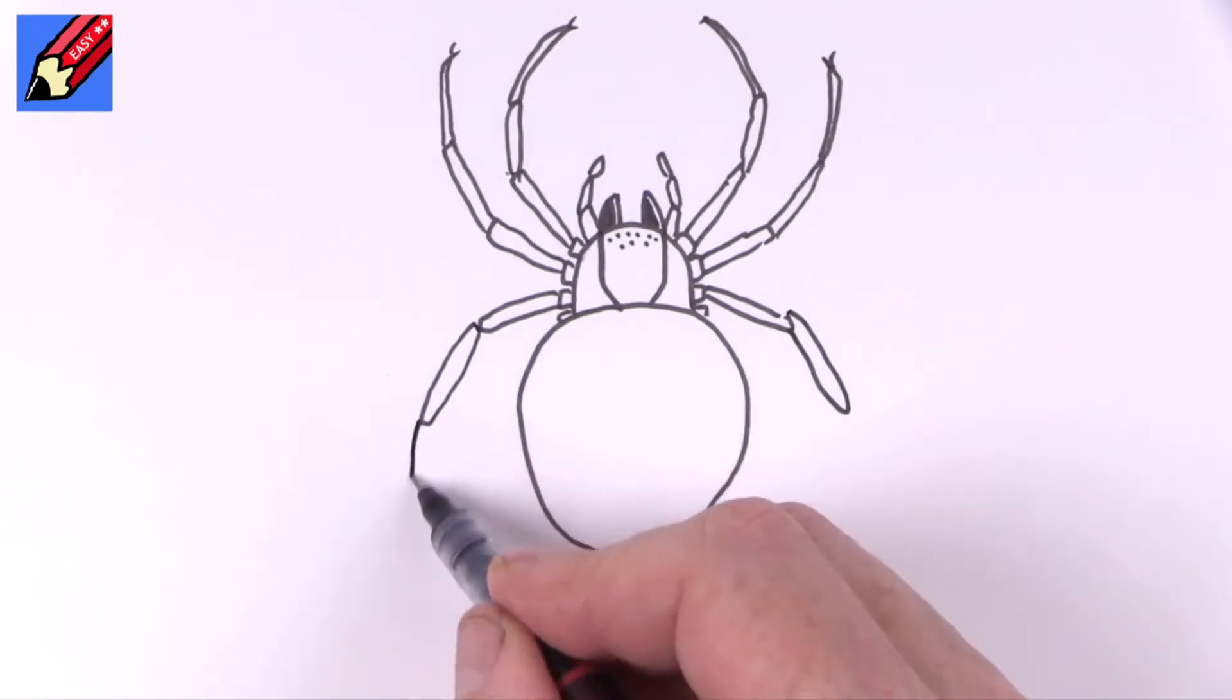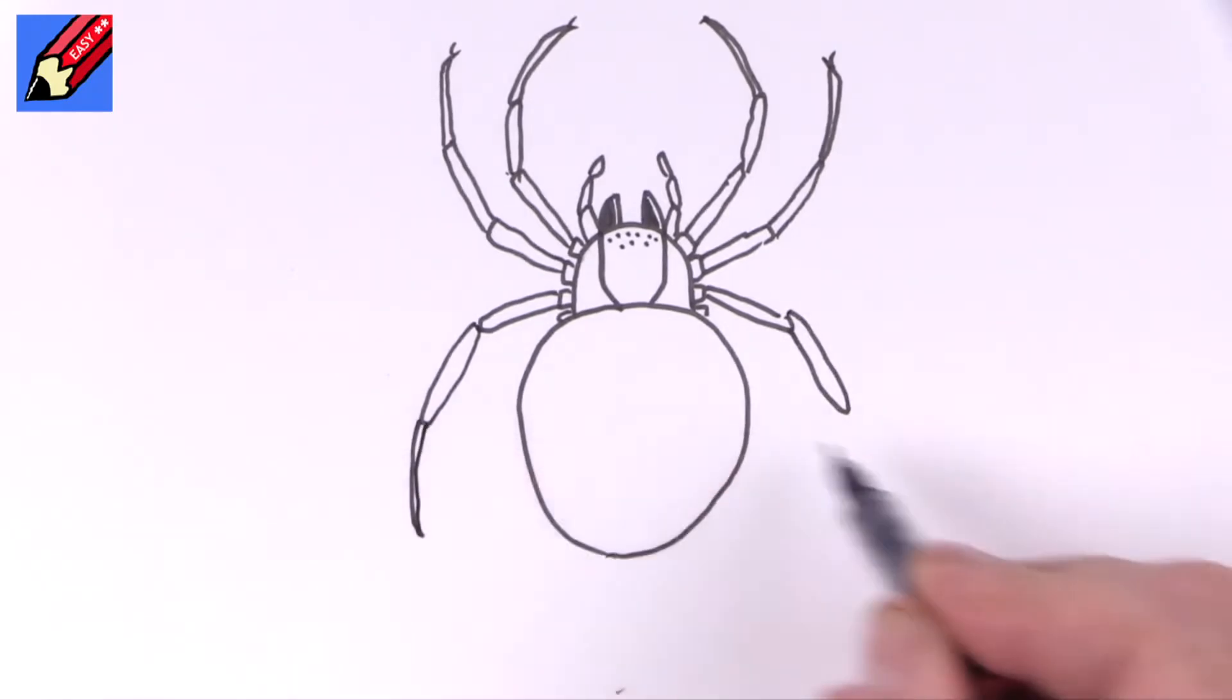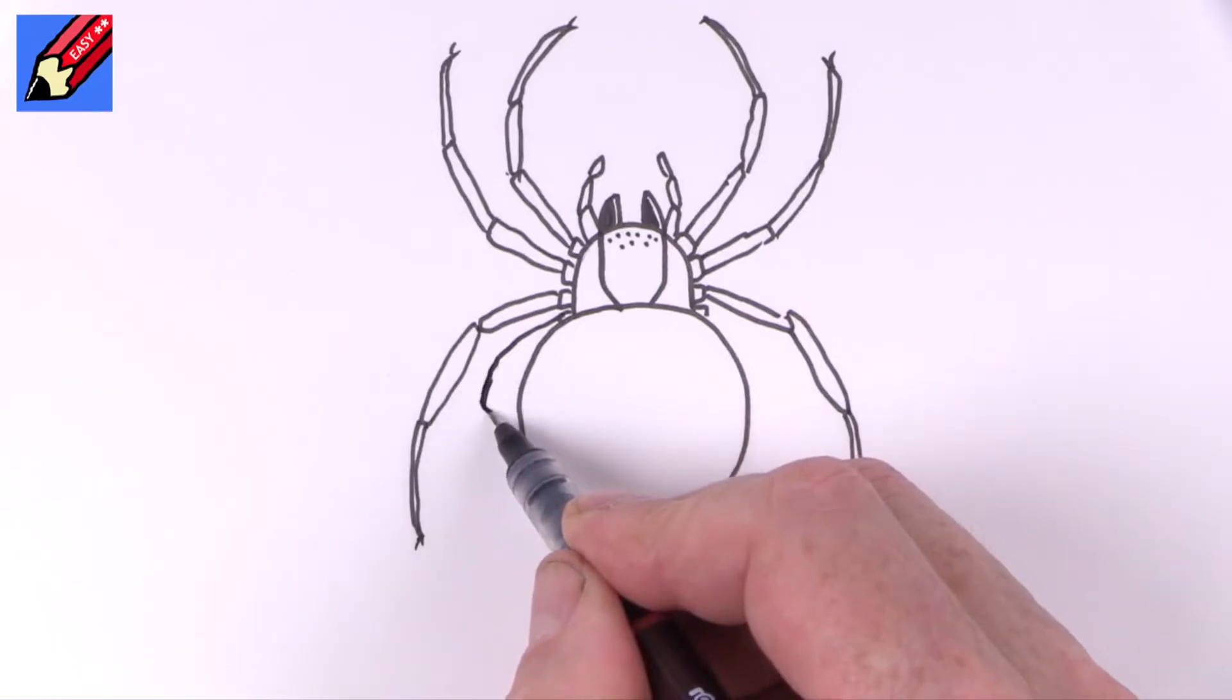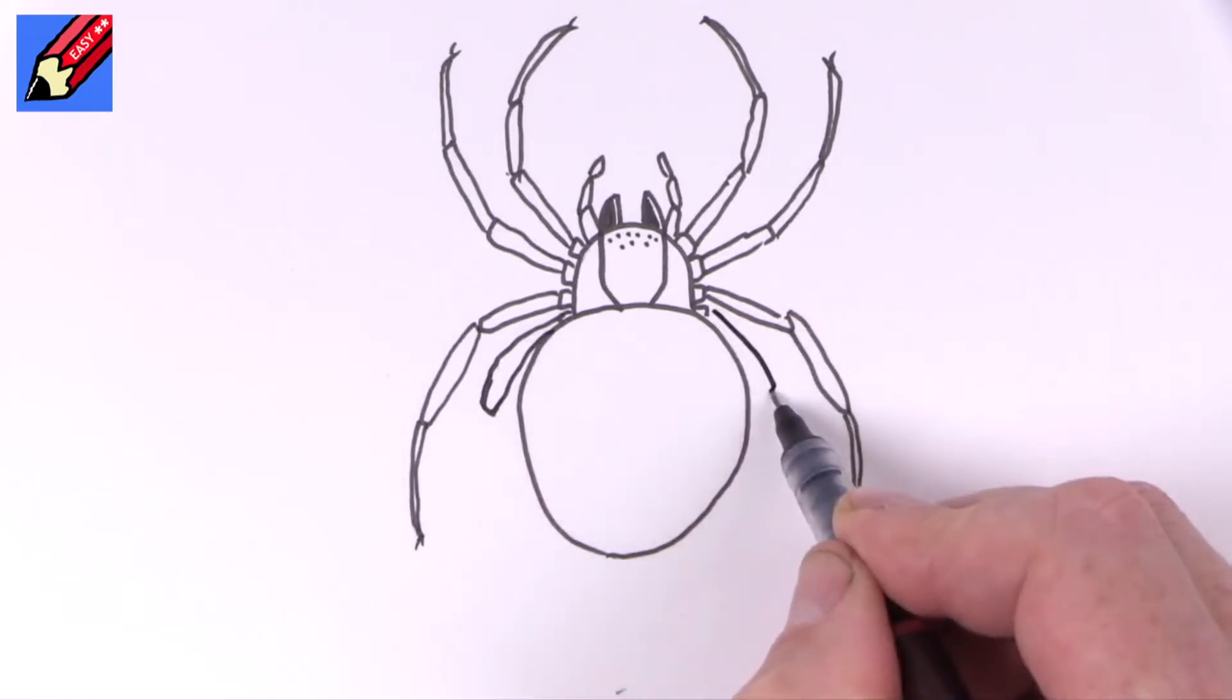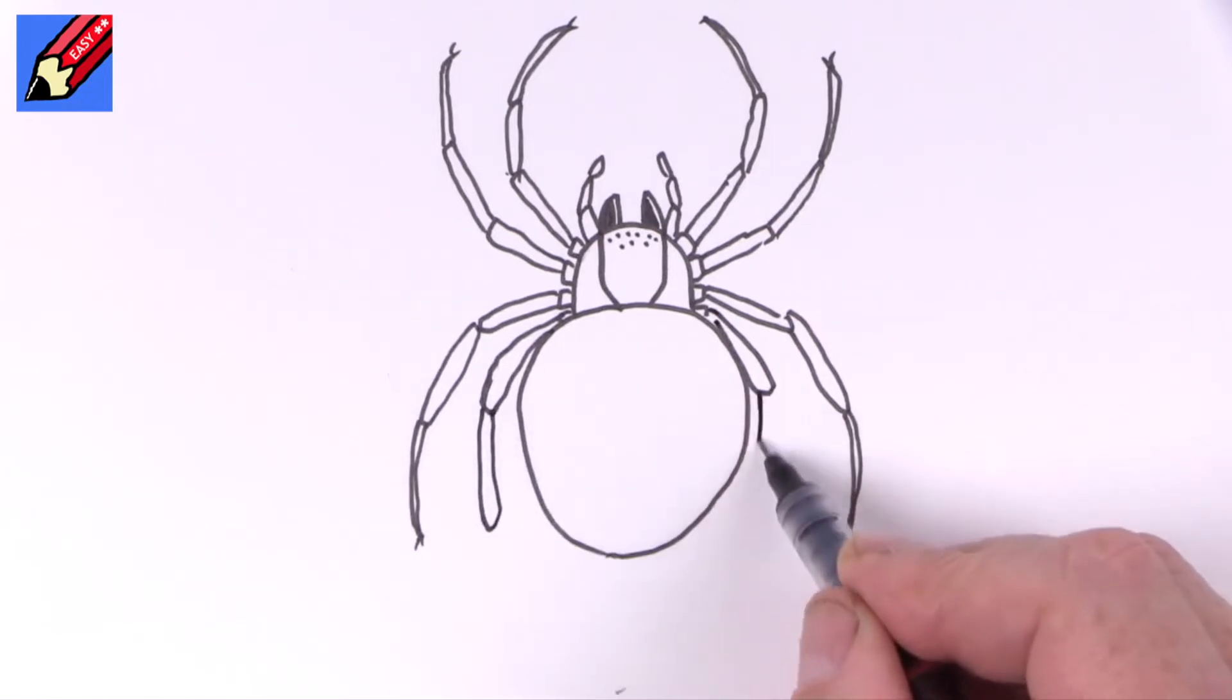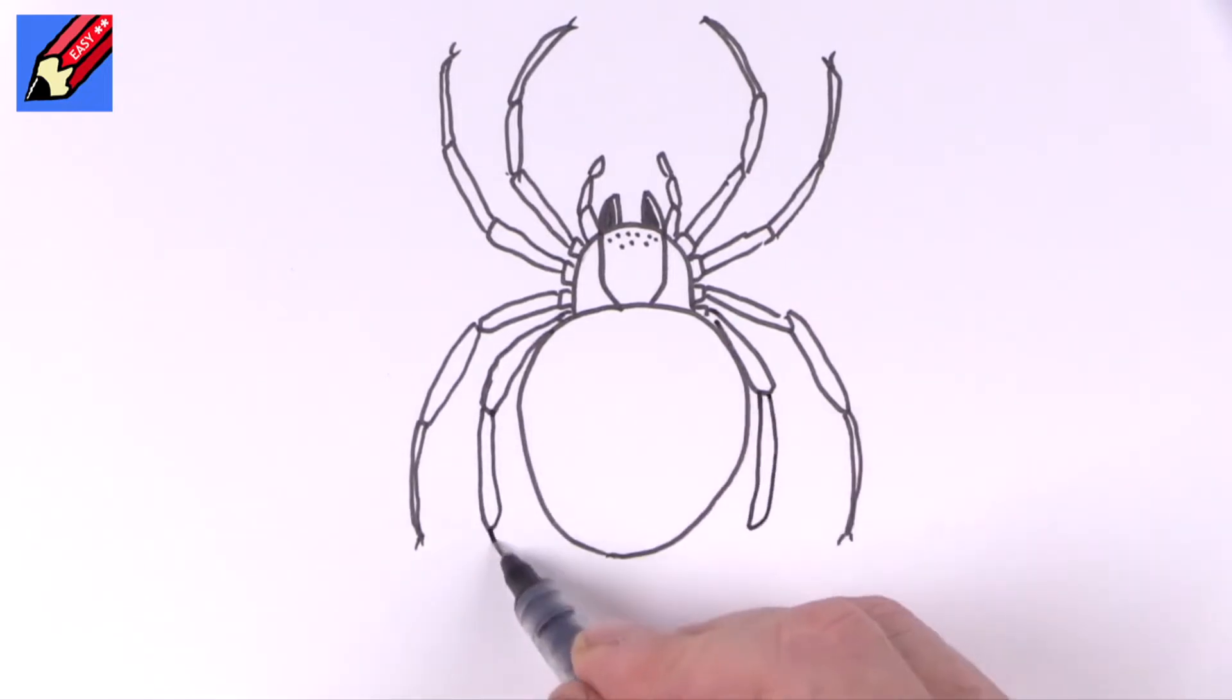And then they will also sort of come down like that. Little scopuli, which sort of help them to stick to their web, or not stick to them, so they can sort of crawl around on their web and not get stuck to it, because that's not going to help a spider much at all.